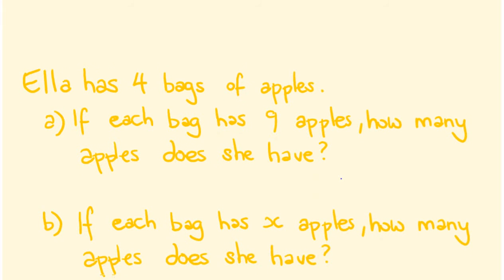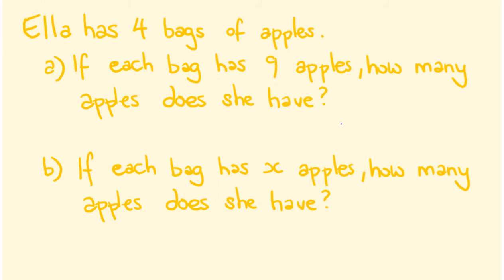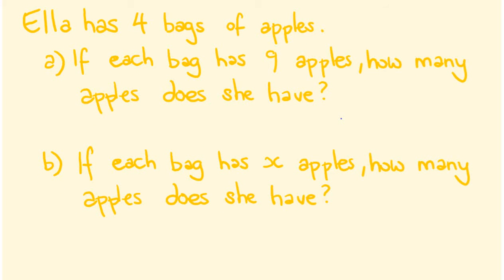I'll give you some examples here — we've only got a few but they sum up what we should be up to so far. Say we have this question: Ella has four bags of apples. There are two parts — if each bag has nine apples, how many apples does she have? And then, if each bag has x apples — where x is a variable amount that can change — how many apples does she have?